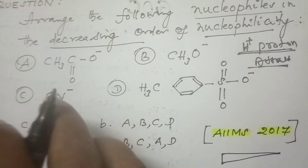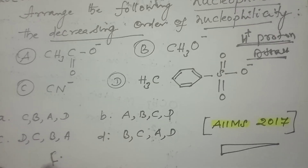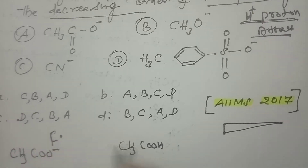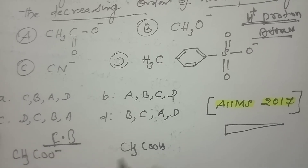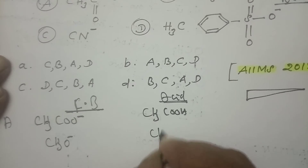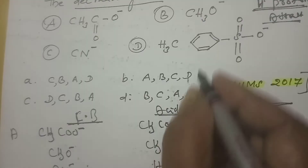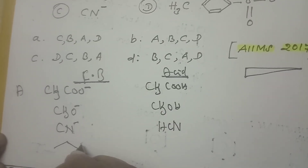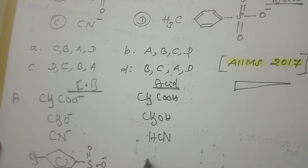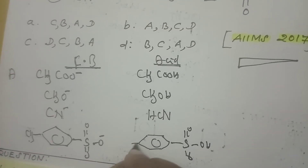Here four things are available. Segregate them into two headings. First heading: CH₃COO⁻ and CH₃COOH — CH₃COO⁻ is the conjugate base, CH₃COOH is the acid. This is labeled A. Now B: CH₃O⁻ and CH₃OH. Next C: CN⁻ and HCN. Next D: a benzene ring with a sulfonic acid group and methyl group. This is your corresponding acid. So we have A, B, C, D with their conjugate bases and corresponding acids.